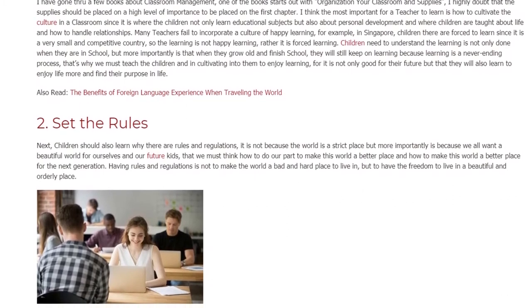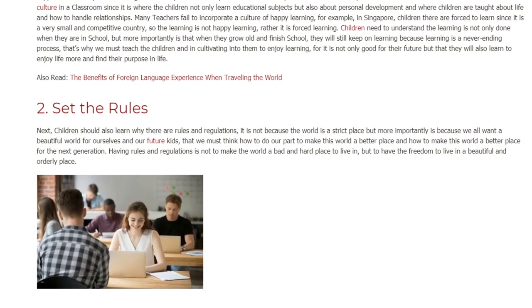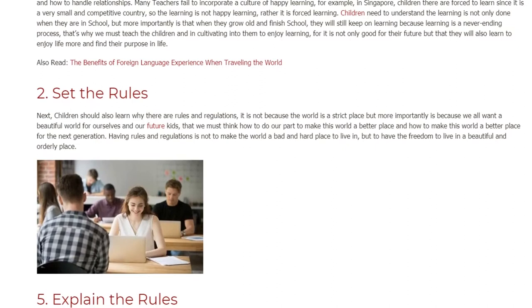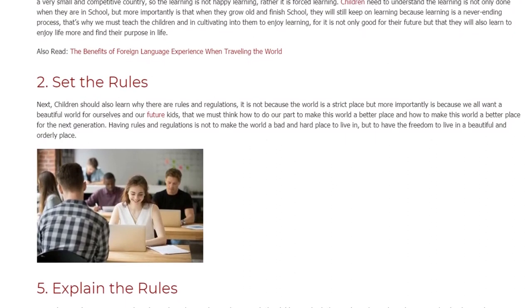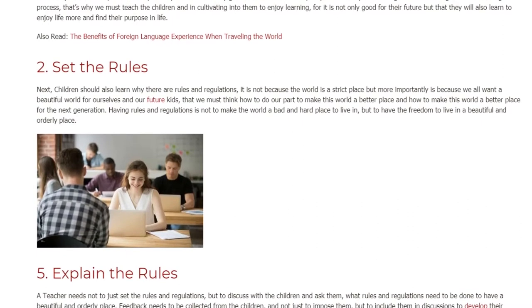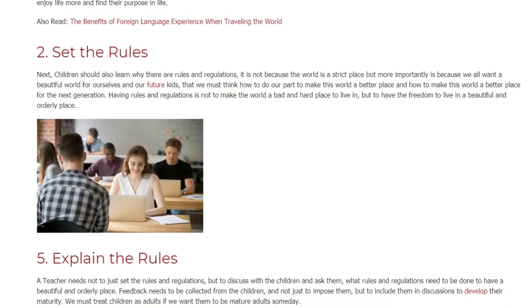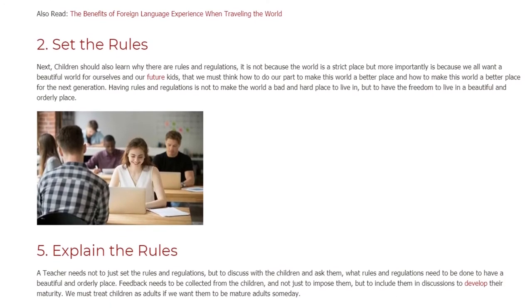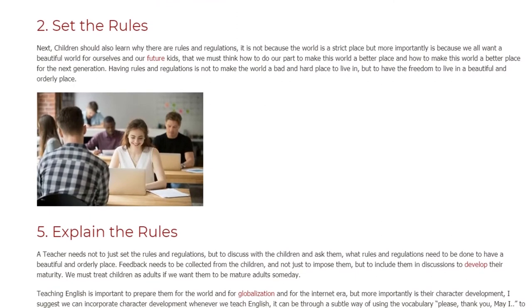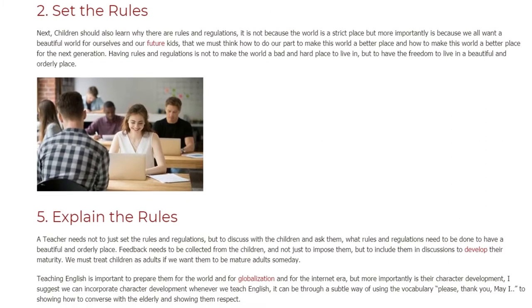Step 2: Set the Rules. Children should also learn why there are rules and regulations — it is not because the world is a strict place, but more importantly because we all want a beautiful world for ourselves and our future kids. We must think how to do our part to make this world a better place for the next generation. Having rules and regulations is not to make the world a bad and hard place to live in, but to have the freedom to live in a beautiful and orderly place.